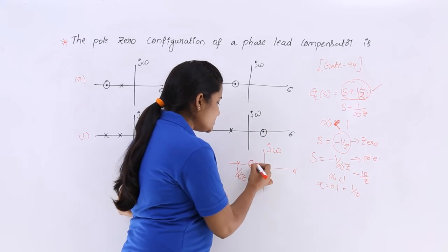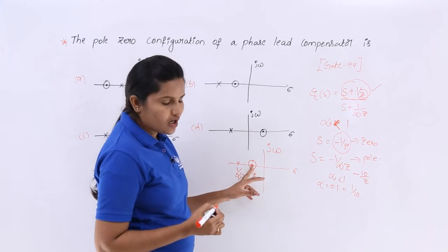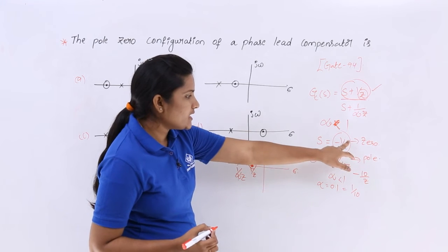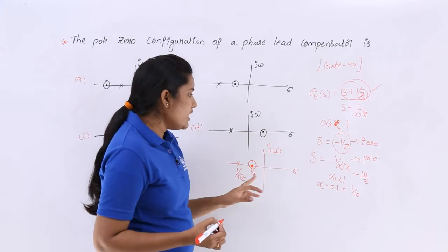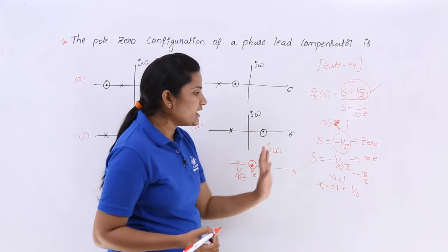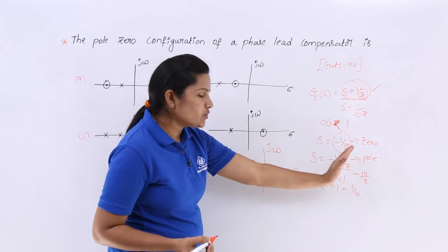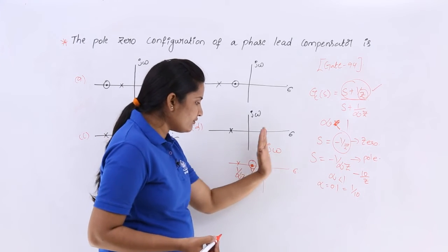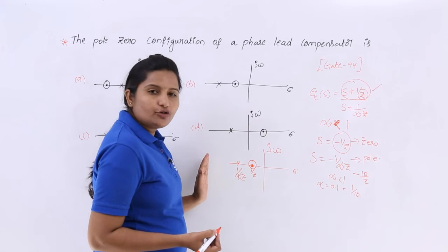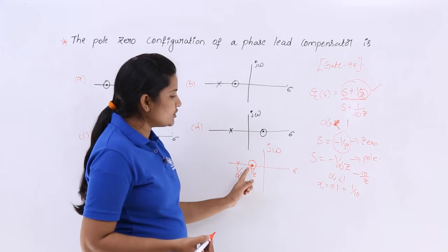How we can take, we will take like this only, right? That is why I am considering like this. This is pole not zero, this is zero not pole. This minus 1 by Z is zero and this one is pole. Where I need to locate this pole? Right to this zero or left to this zero?